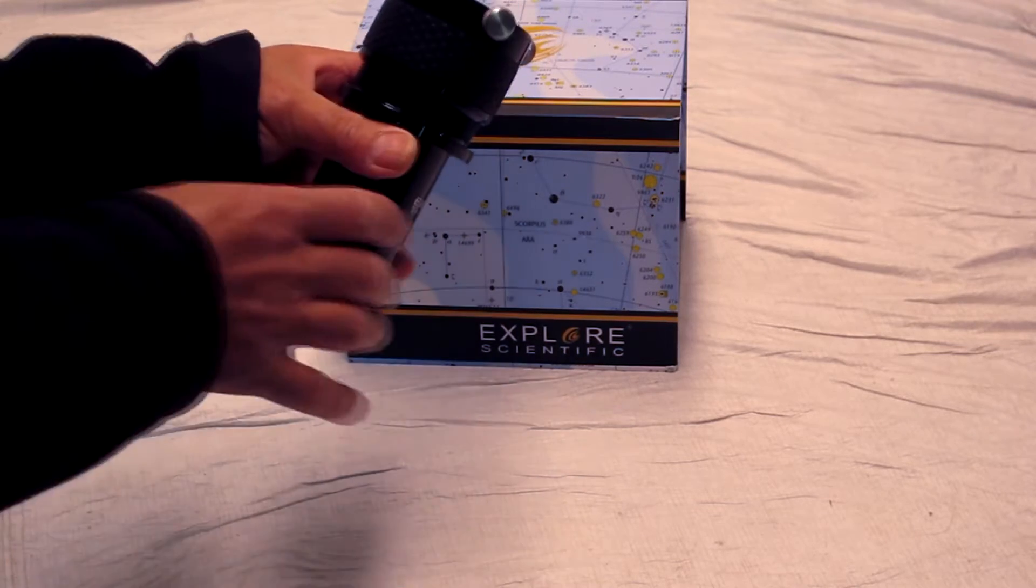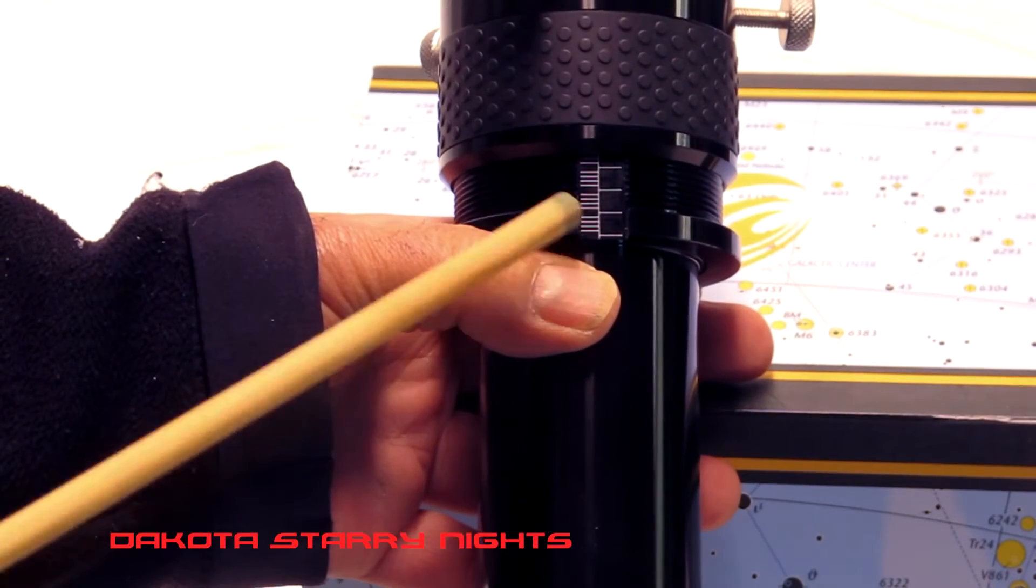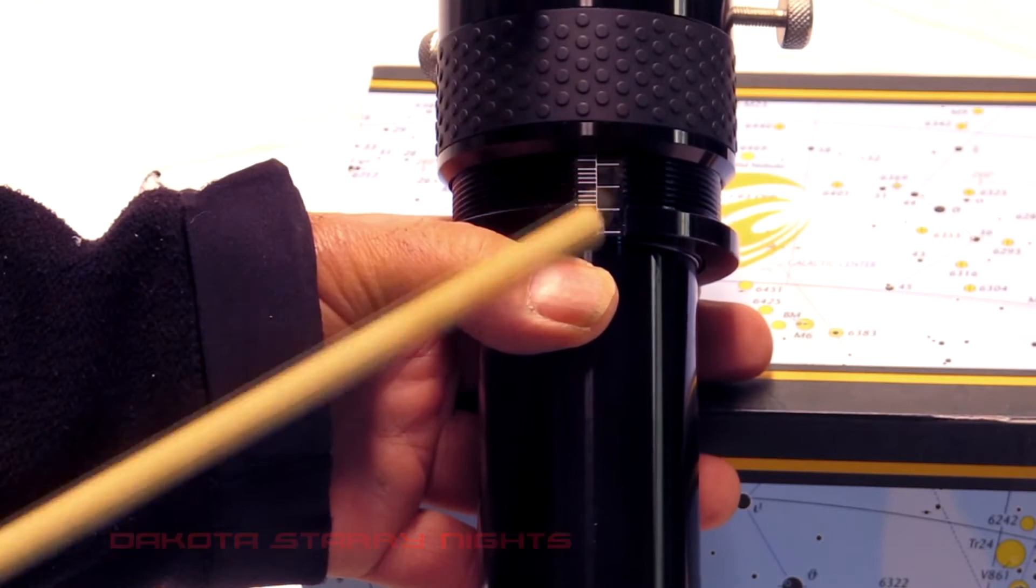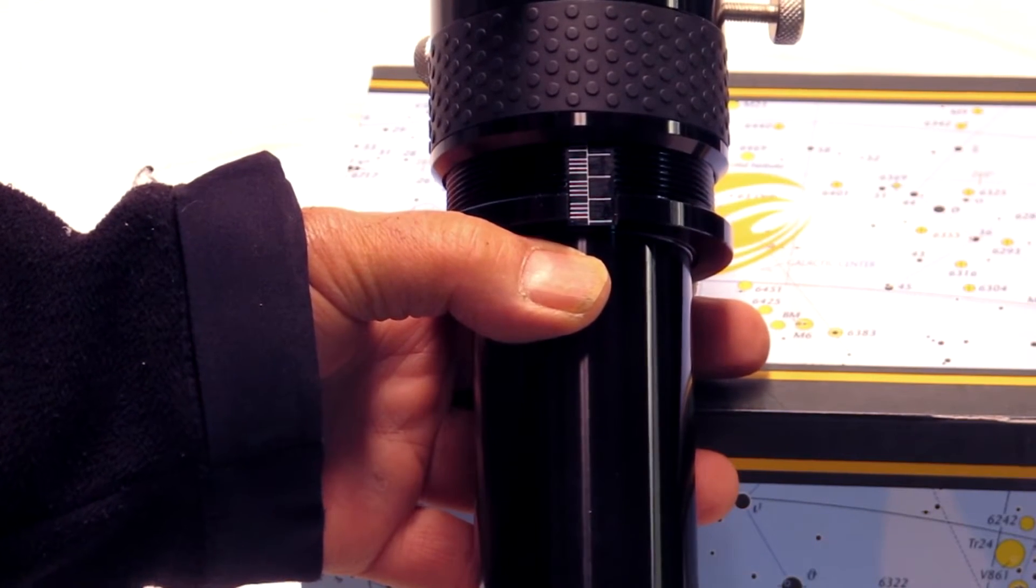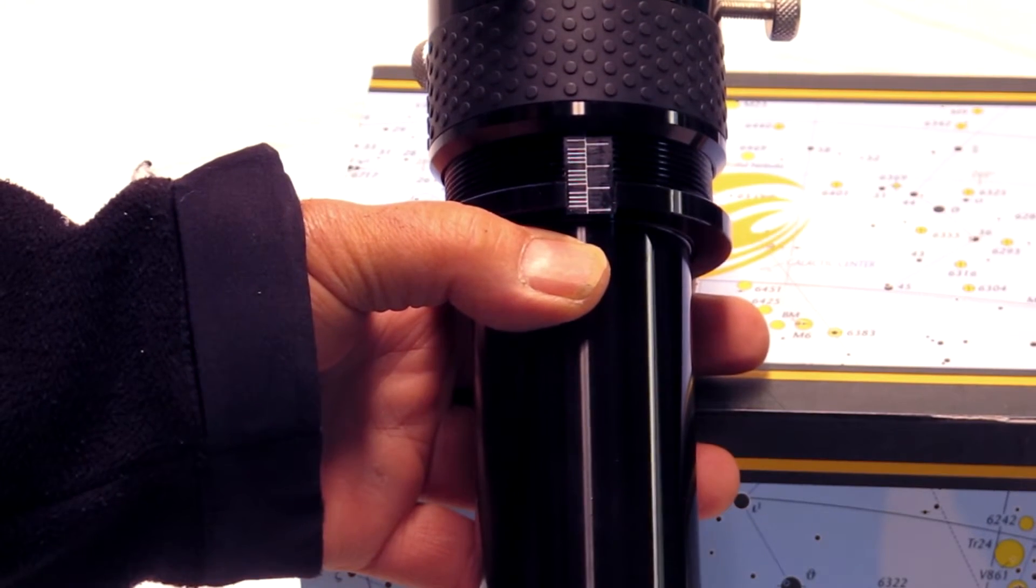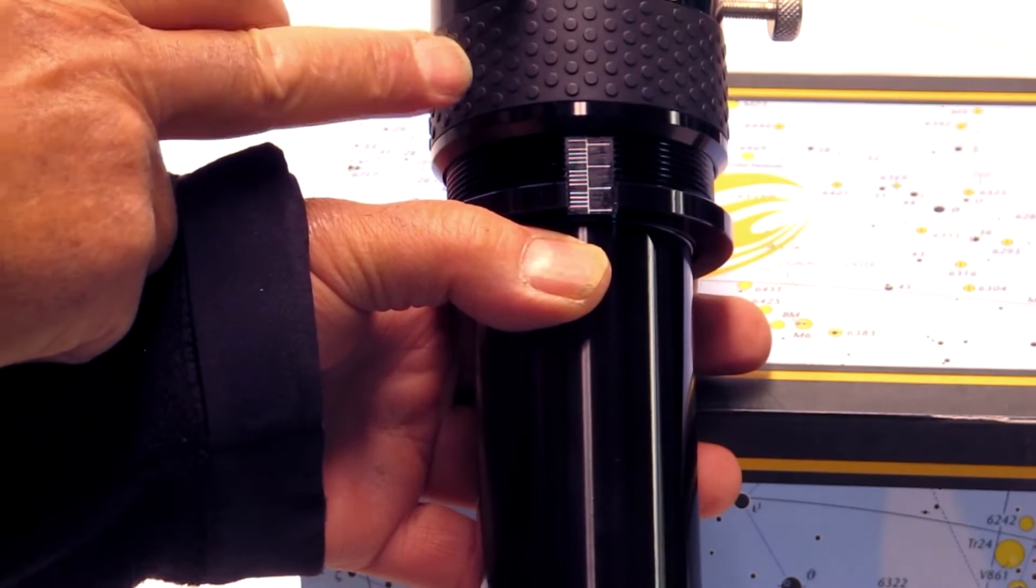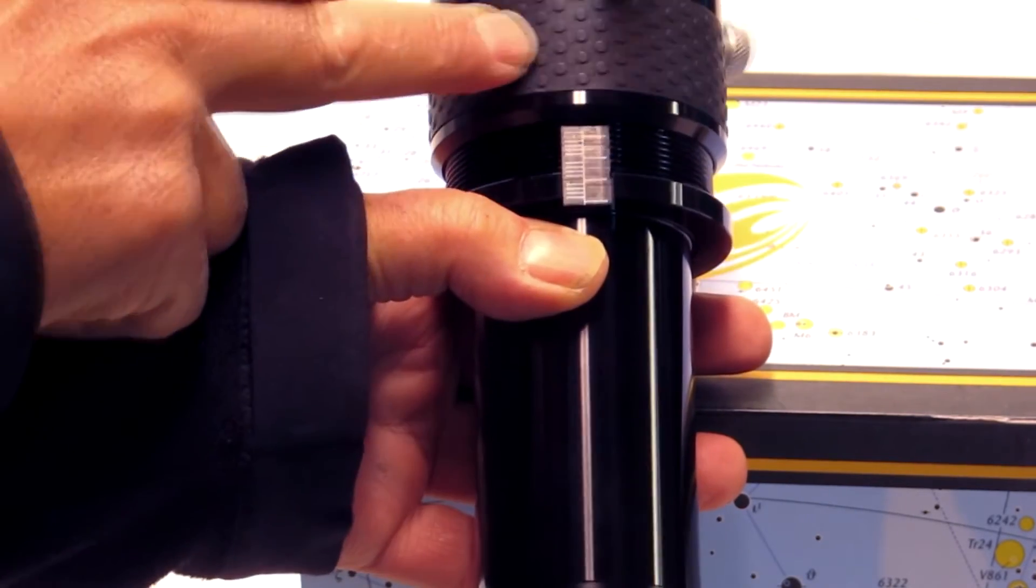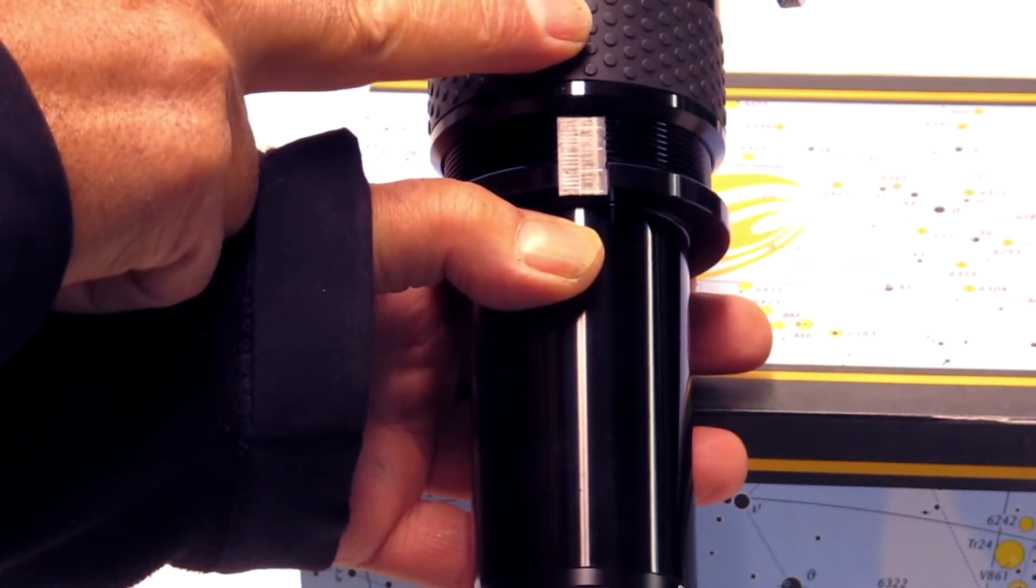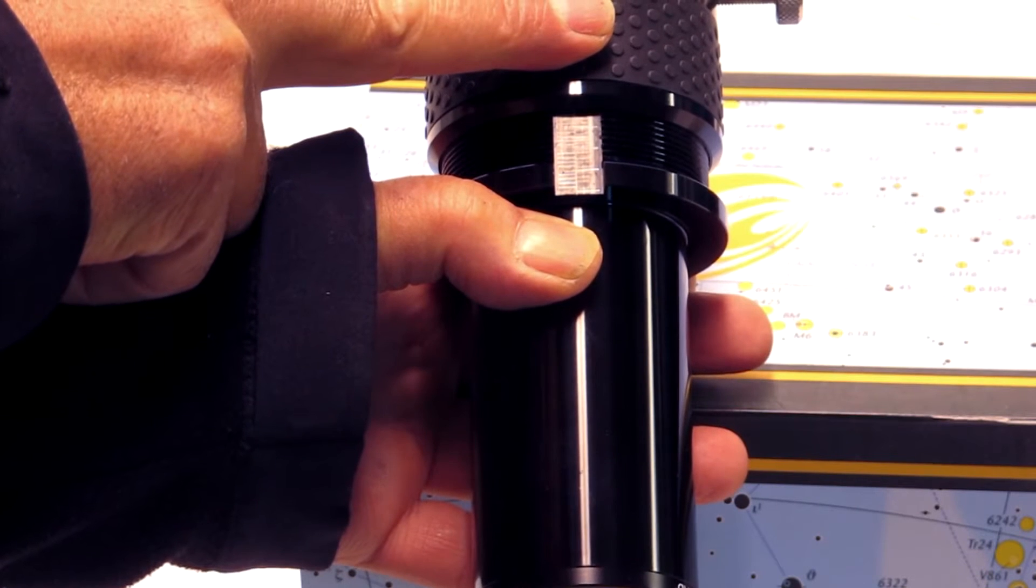So the way this operates, you see a scale here in one millimeter increments, and each one of these larger bars represents five millimeters. And initially, you would put this in your focuser and adjust this to where it's 13 millimeters, or 13 and a half, rather. So that would be right about there, 13 and a half.